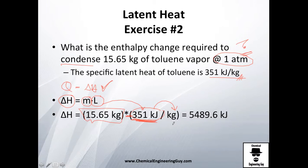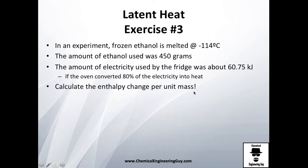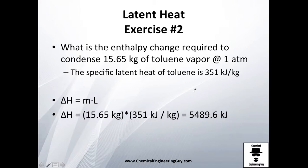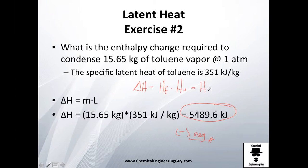That calculation is for one kilogram, but we have 15.65 kilograms, so we need to multiply that. Eventually you get this quantity here, which is negative — because you're taking out energy. From high-energy vapor, which has a lot of molecular movement, you're reducing the energy and going to the liquid state. This value must be negative because enthalpy change is final state minus initial state: the final state is saturated liquid and the initial state is saturated vapor, and the enthalpy of vapor is way higher than that of the liquid.